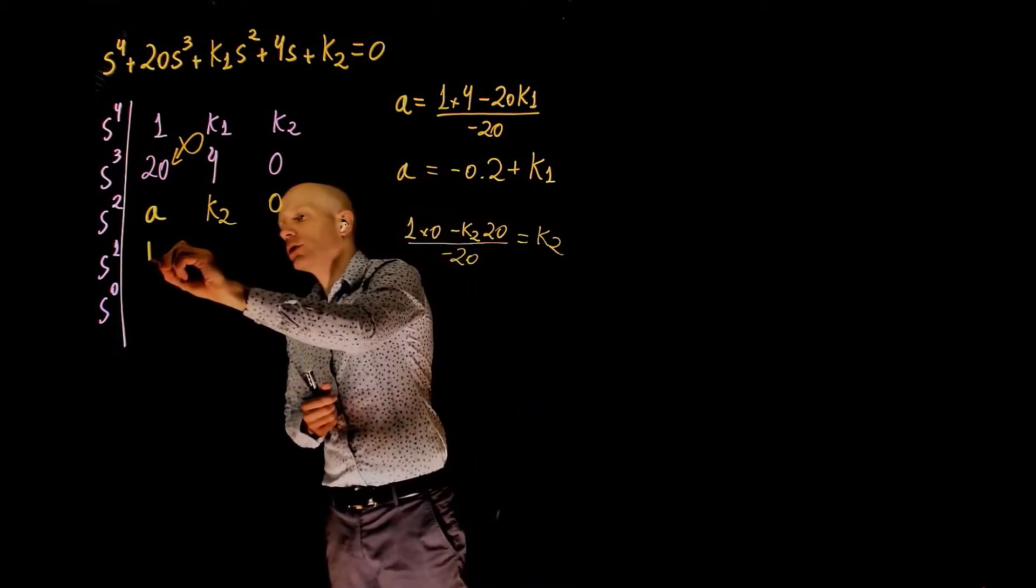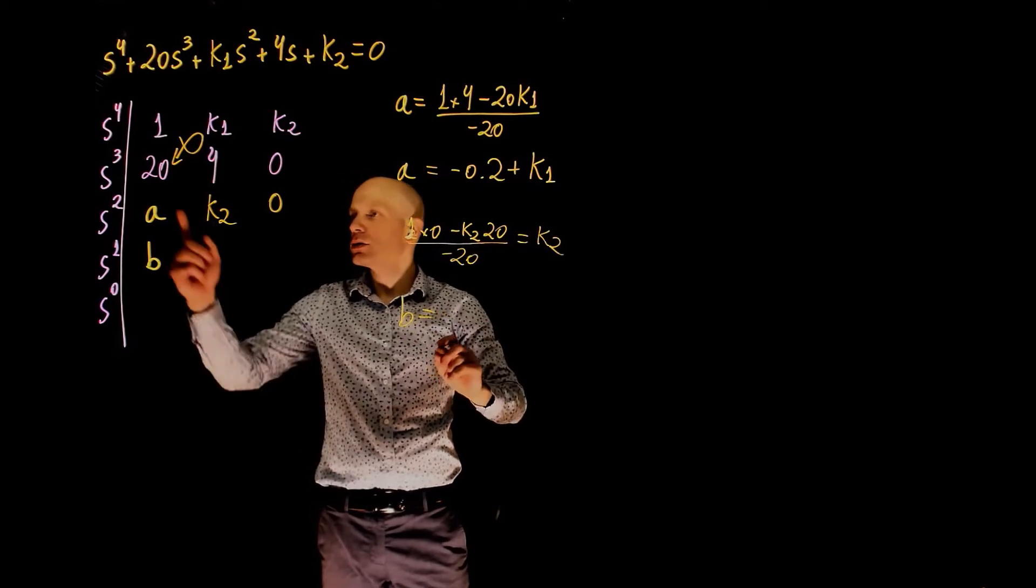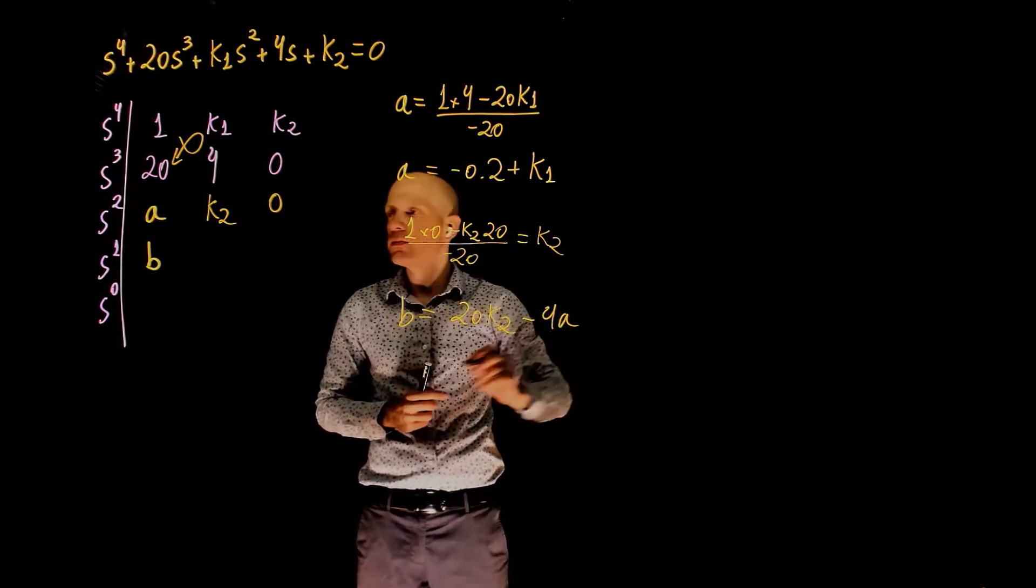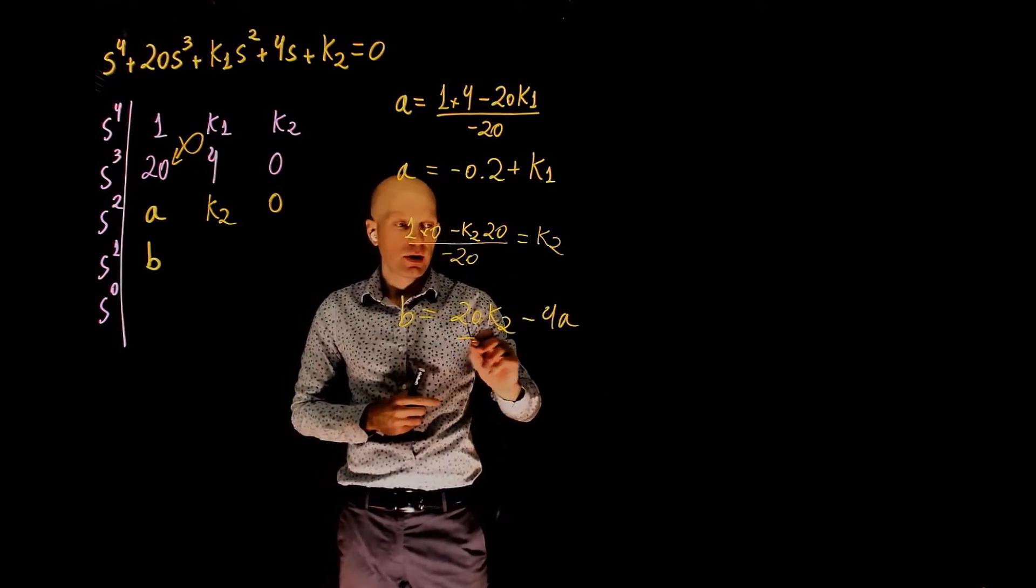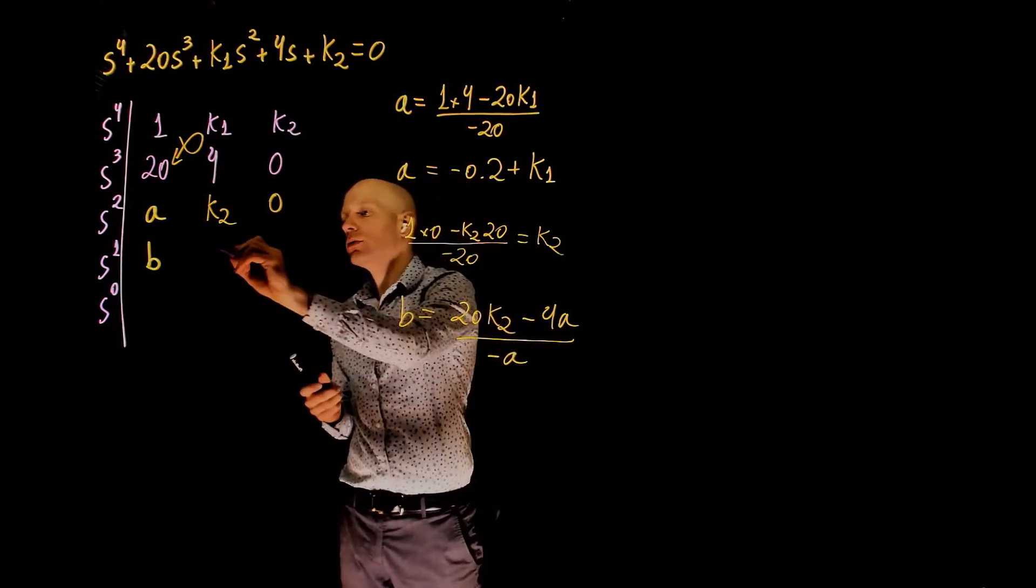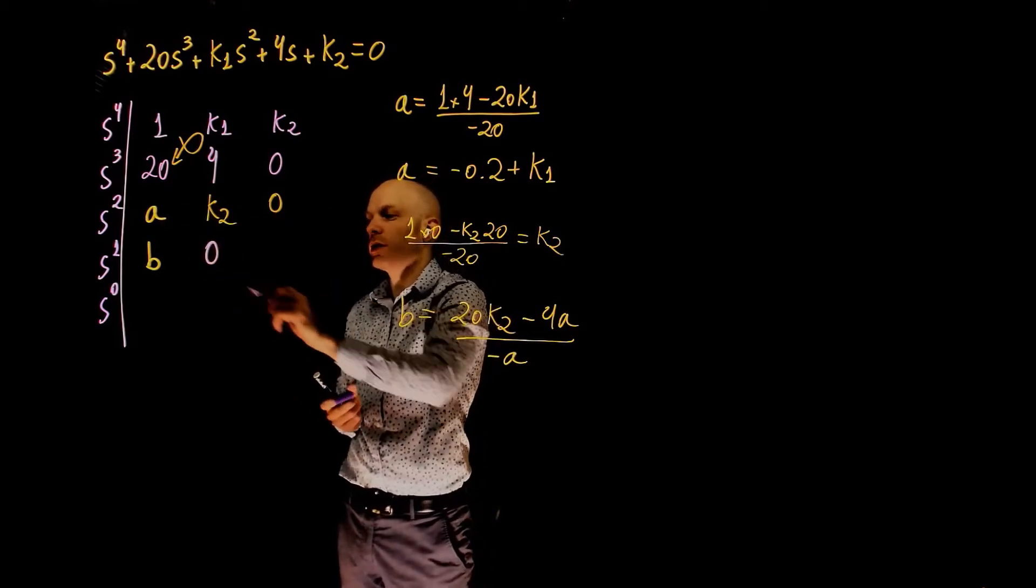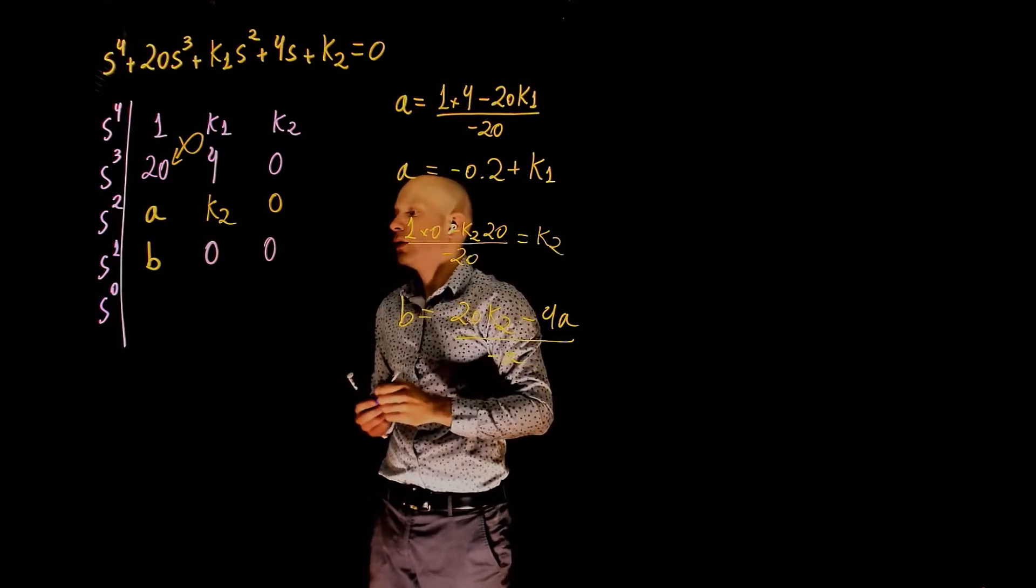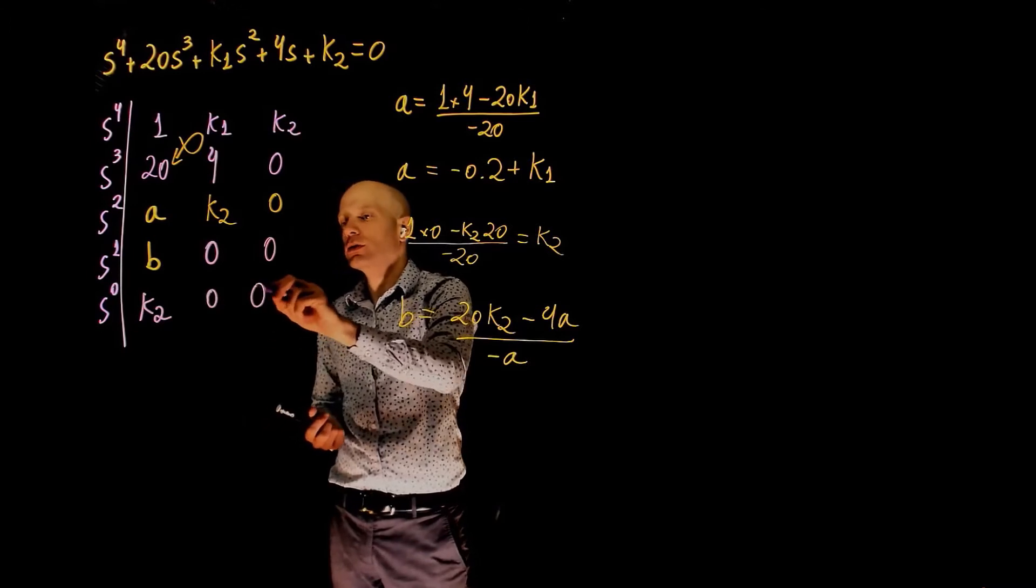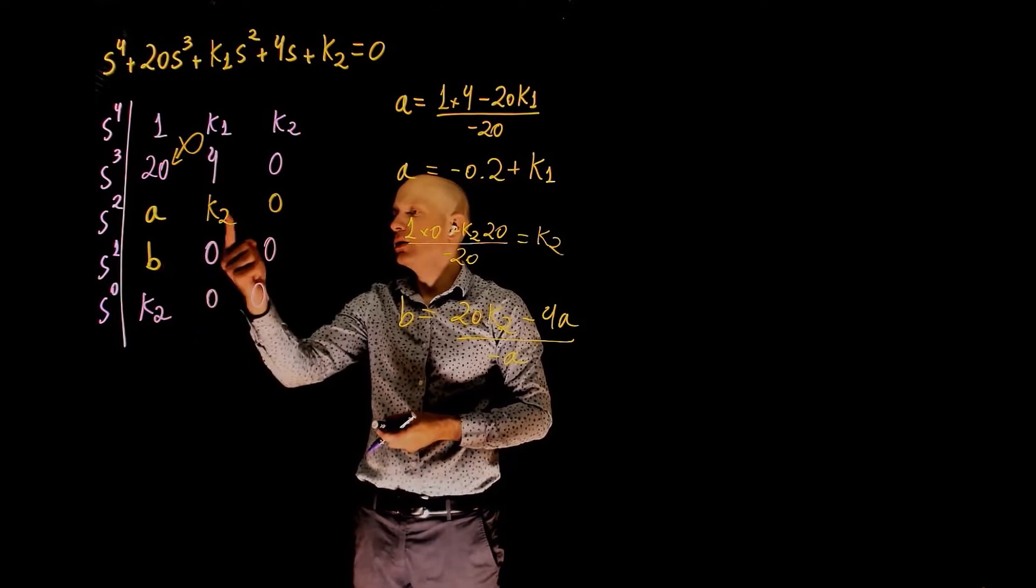And now we have the coefficient here, let's call this b. b is 20 times k2 minus 4 times a divided by negative a. The next element here is 0. This element is also 0. And the last element here is k2. a times 0 minus k2 times b divided by negative b, that's k2.